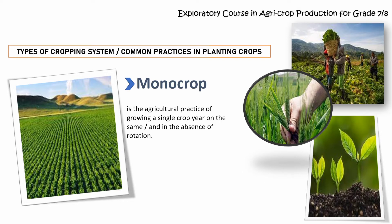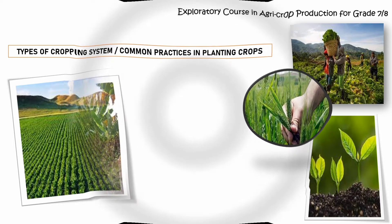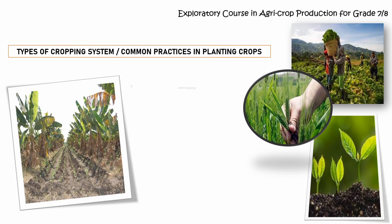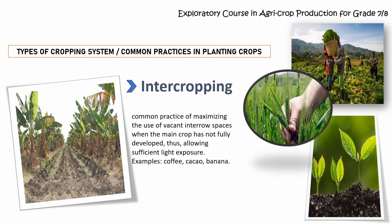Monocrop is the agricultural practice of growing a single crop year after year on the same land in the absence of rotation. Next, we have intercropping. It is the common practice of maximizing the use of vacant inter-row spaces when the main crop has not fully developed, thus allowing sufficient light exposure. Examples of this are coffee, cacao, and banana.